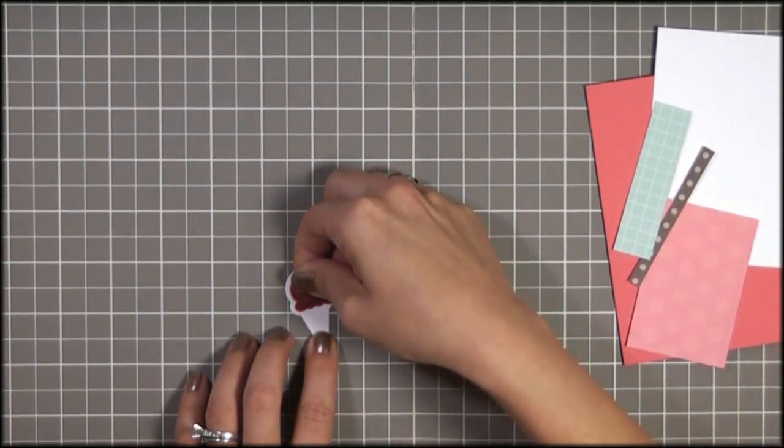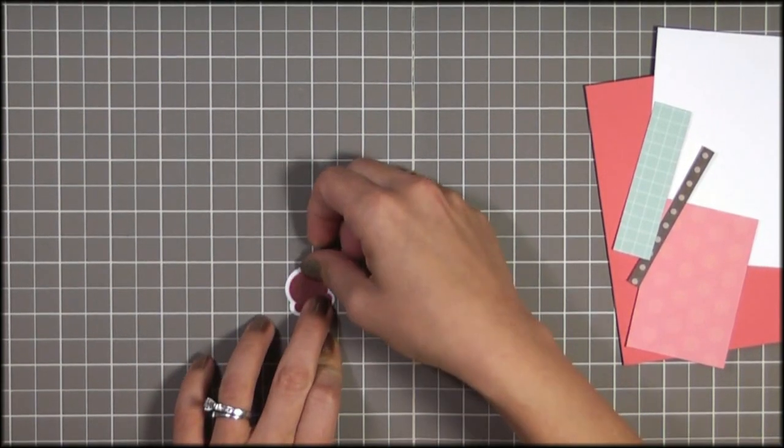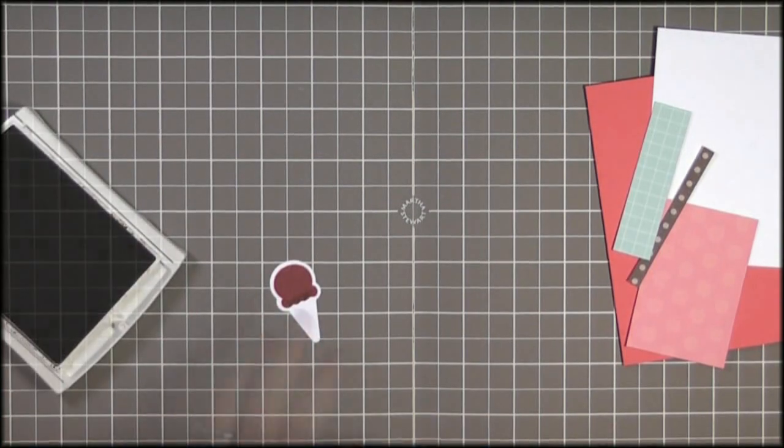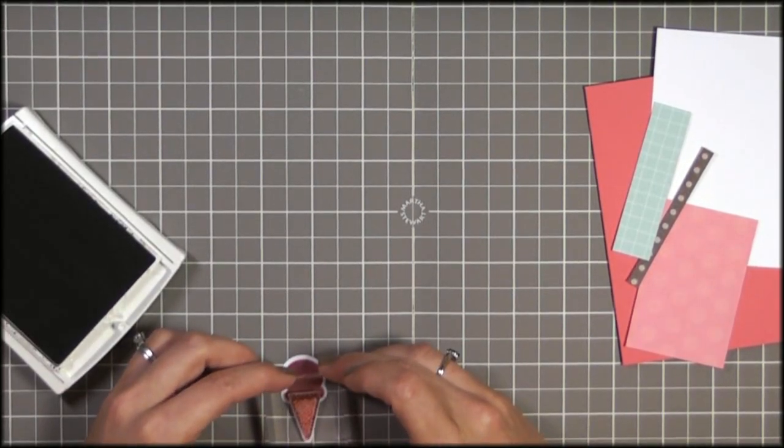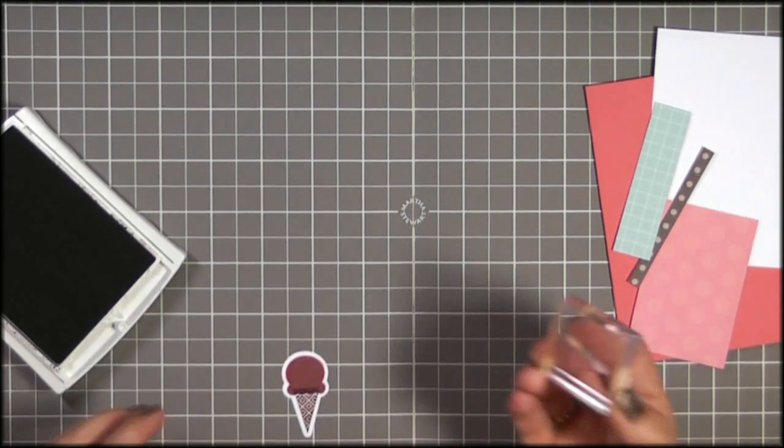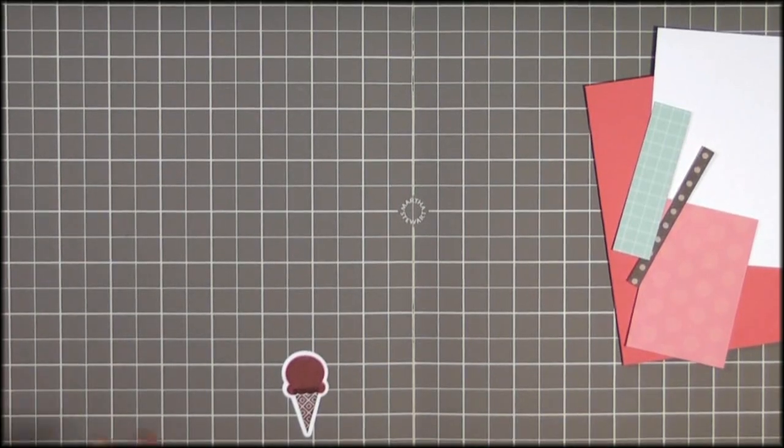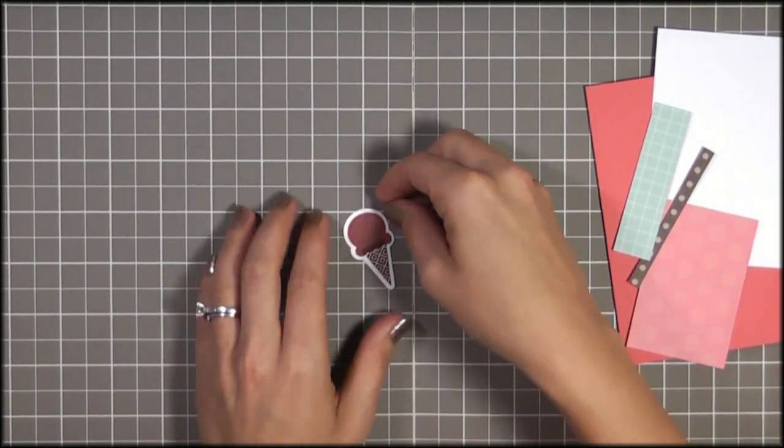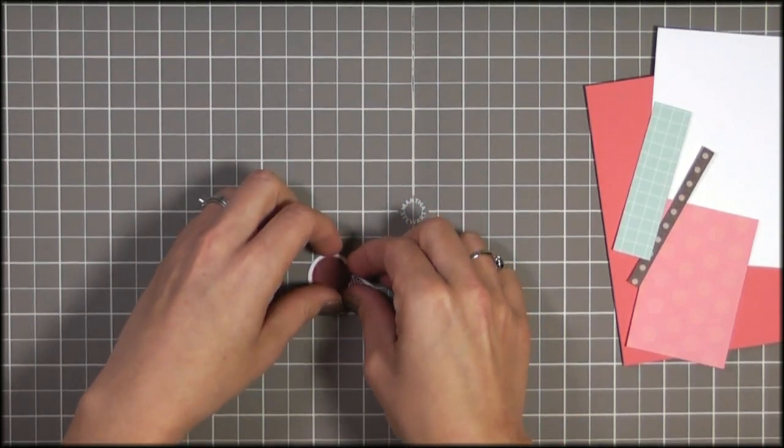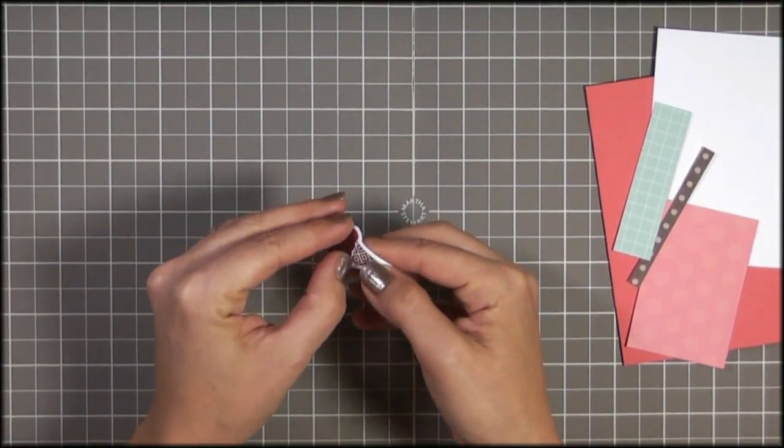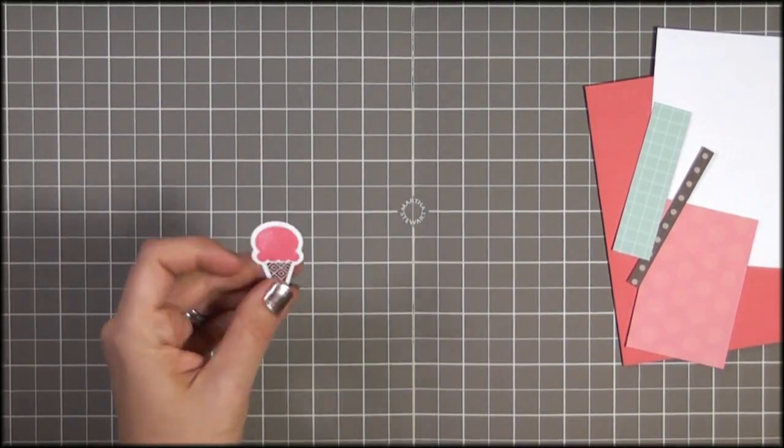So I'm just going to mask off where I've already stamped. And then I just remove my mask. See if I can pick this little shape up here. There we go.